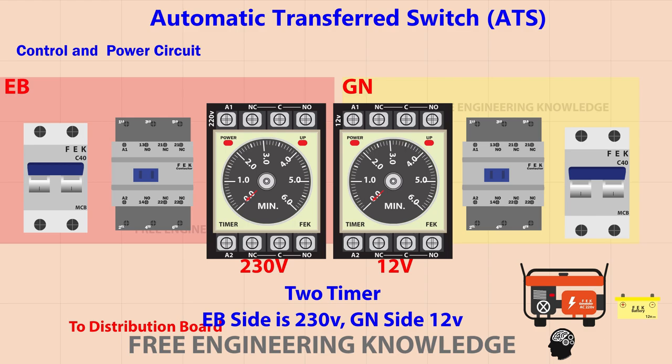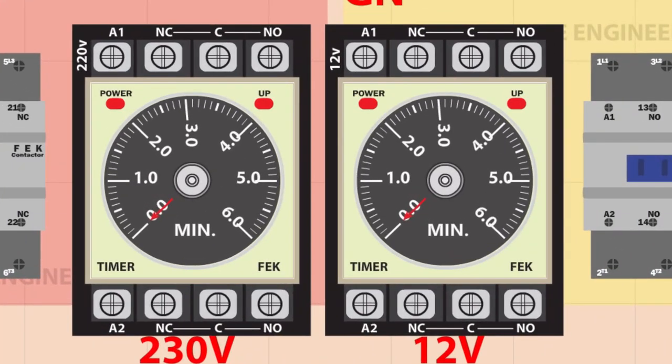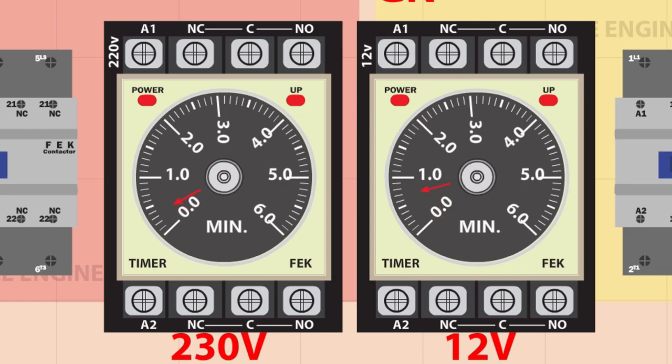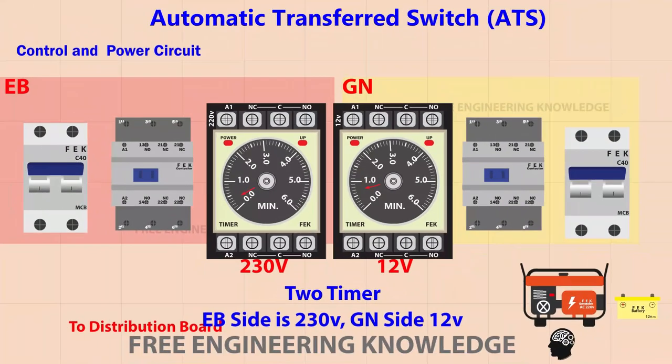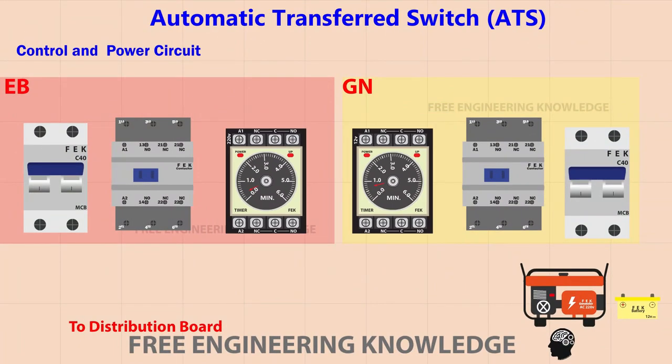Why should we use timers? Sometimes there is a power cut on the EB side and it comes back on suddenly, which can affect the electronic devices in our home. These two timers are used to avoid this. Specifically, the timer on the generator side should be set slightly longer than the timer on the EB side.